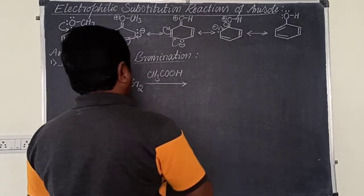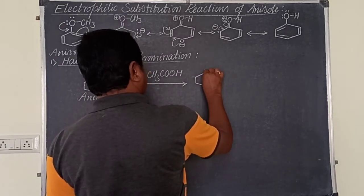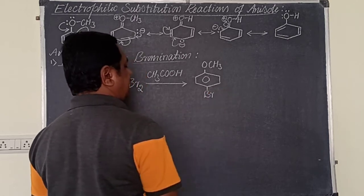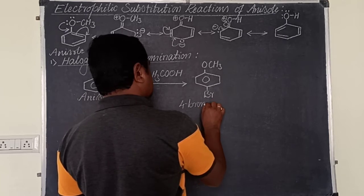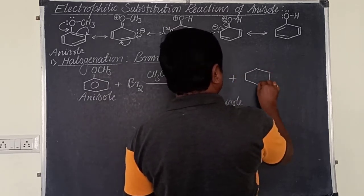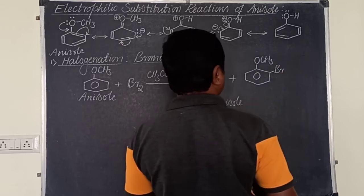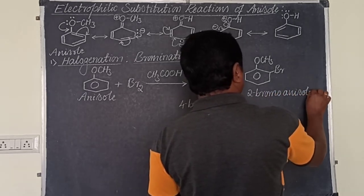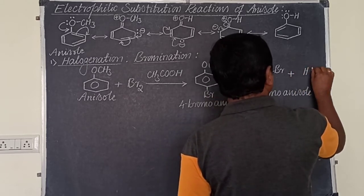Anisole reacts with bromine in the presence of ethanoic acid. It gives ortho and para products. At the para position, hydrogen is replaced by the electrophile Br+, giving para-bromo anisole as the major product. At the ortho position, hydrogen is replaced giving 2-bromo anisole as a byproduct. The removed H+ combines with Br− to give HBr.